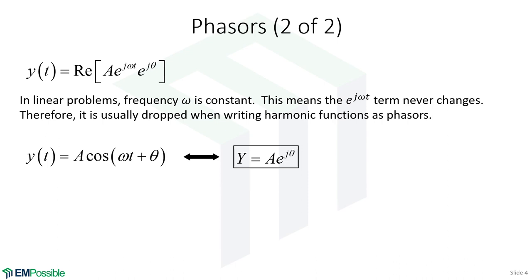So in the end, given some function y(t) = A·cos(ωt + θ), in phasor form we would just write it as a capital Y — to remind us this is a phasor and not the original function — equal to A times e to the j·theta, where theta is the phase. We're not writing the real operation and we're not writing e^(jωt). This is the phasor representing our cosine function.